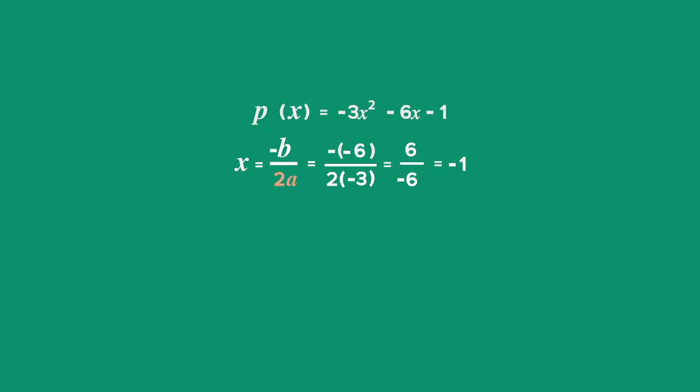Remember, the b value is the coefficient of x, which is -6, and the a value is the coefficient of x², which is -3.